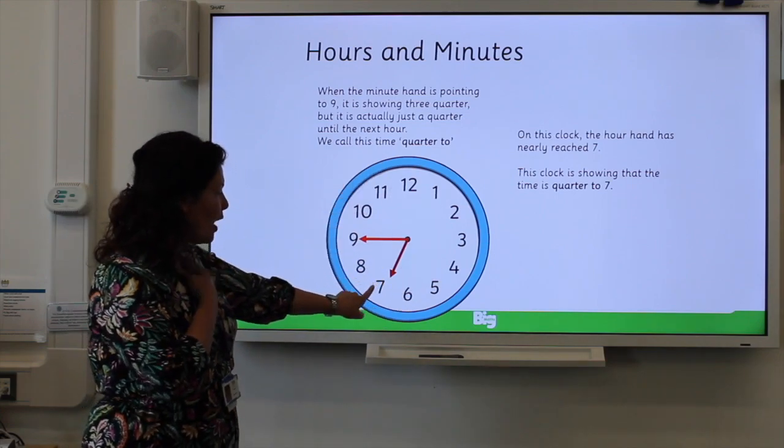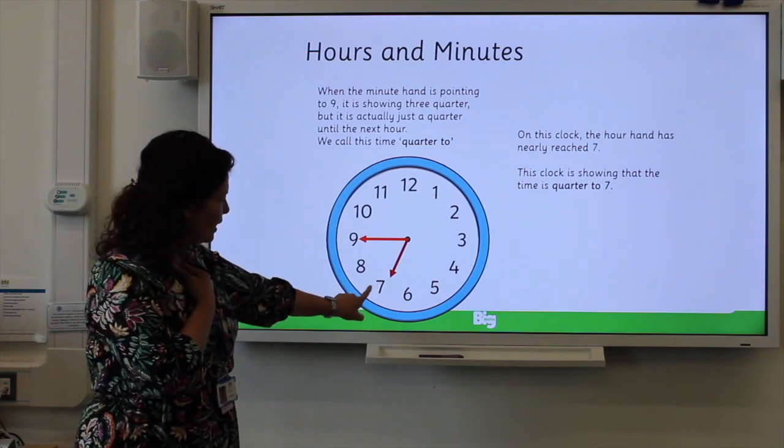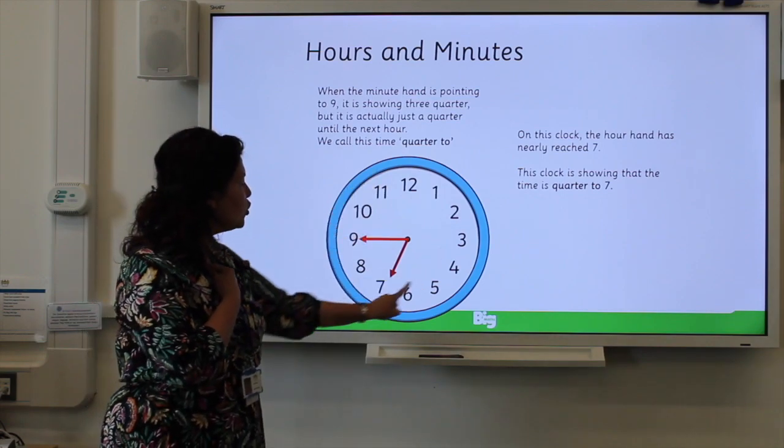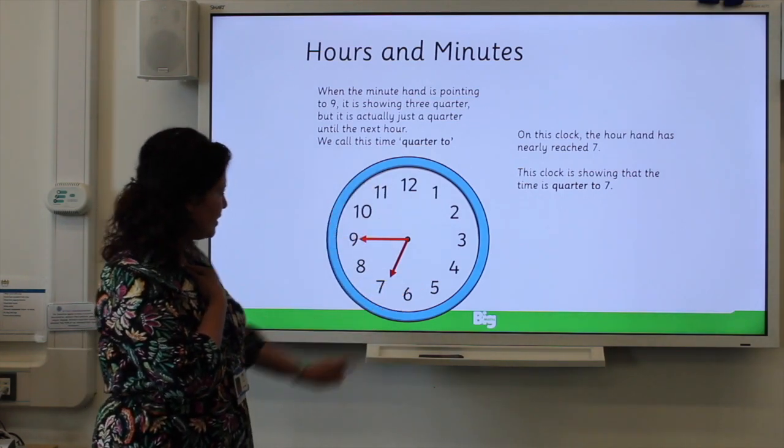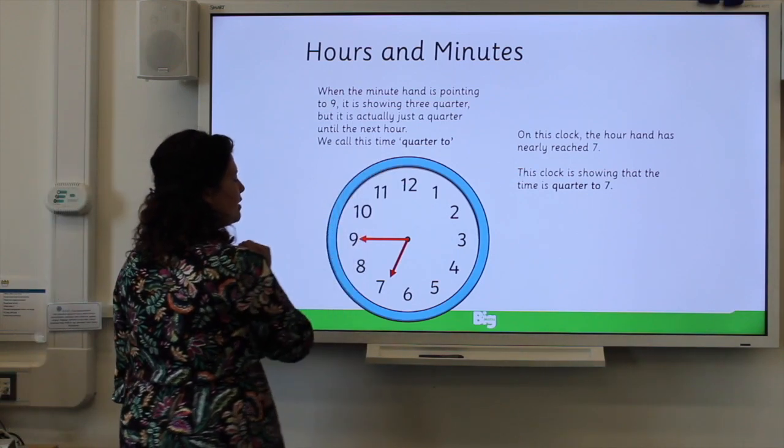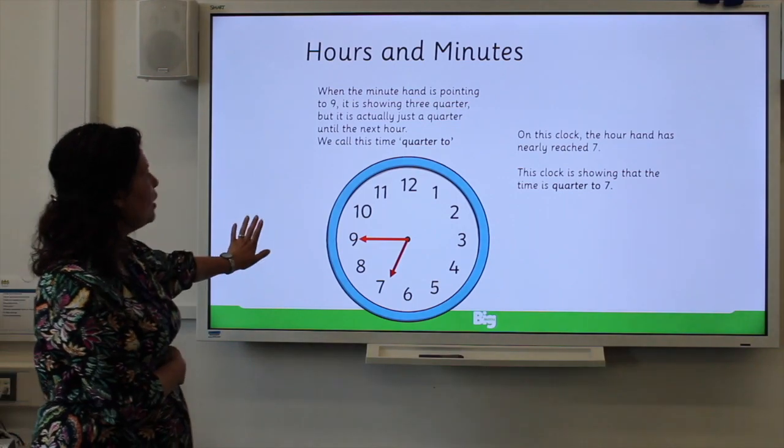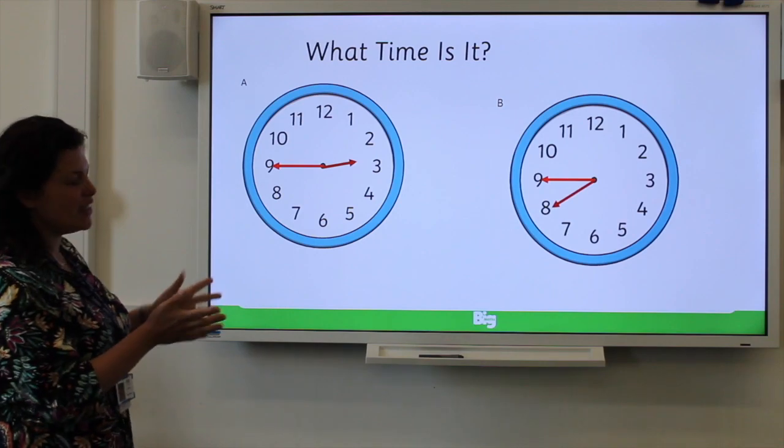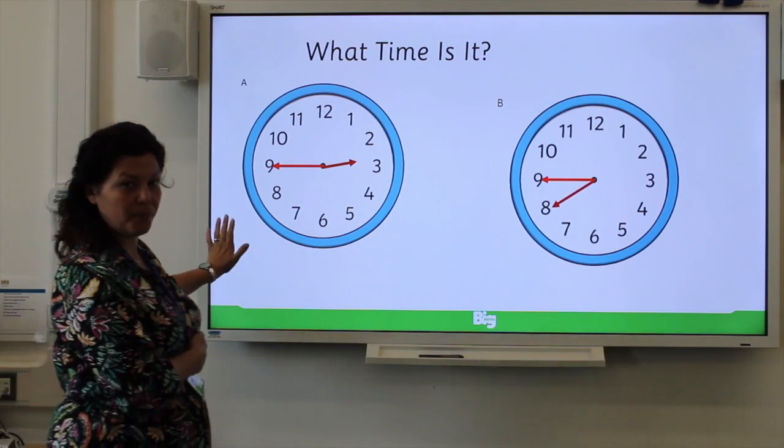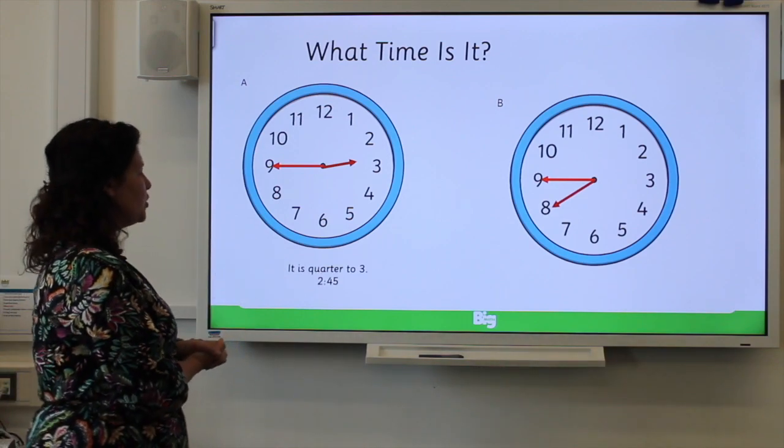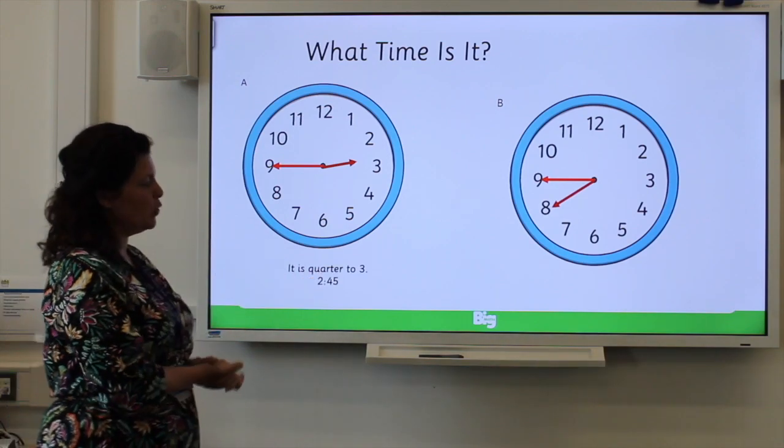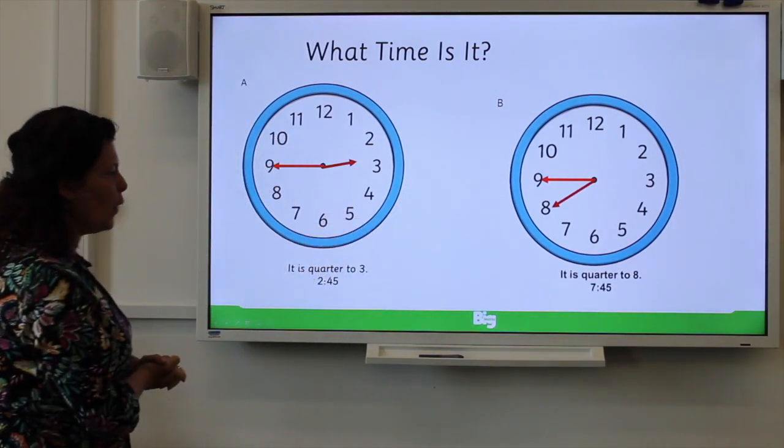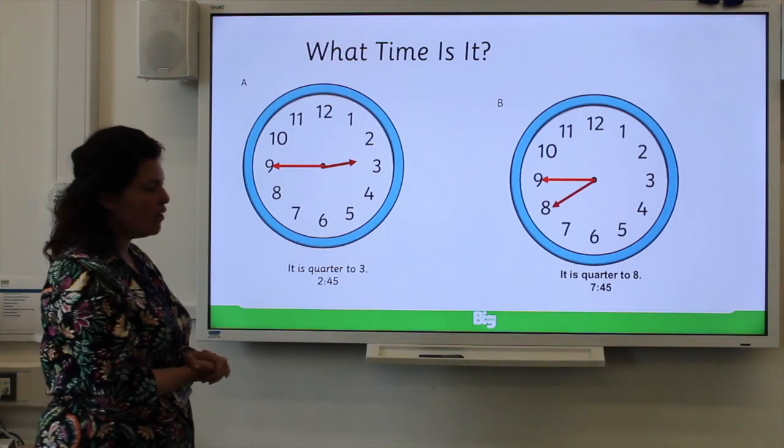Where's that hour hand? It's not quite past that seven, but that is the hour we need to be looking at, that next number. So the time is quarter to seven, because it is nearly seven o'clock but not quite. So it's quarter to. Pause the video and have a go yourself. Hopefully you've written it is quarter to three or two forty-five. And in clock B, it is quarter to eight, seven forty-five.